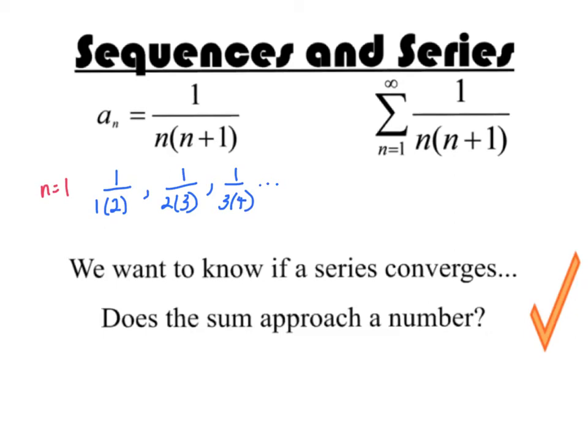A series is the sum of that pattern. So, a series would be 1 over 1 times 2, plus 1 over 2 times 3, plus 1 over 3 times 4, and so on to infinity.